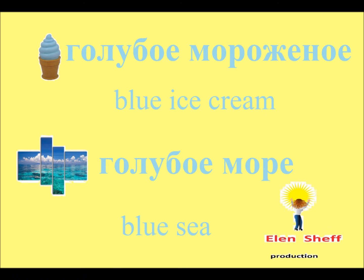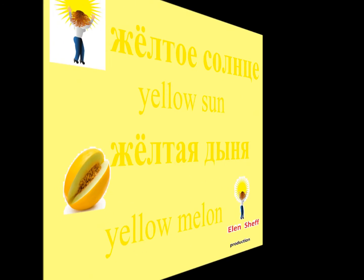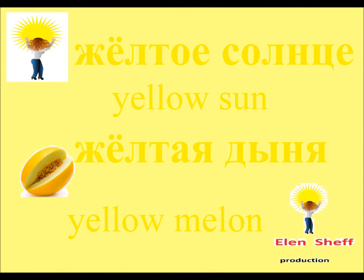Го-лу-бо-е мо-ро-же-но-е. Голубое мороженое. Го-лу-бо-е мо-ре. Голубое море. Жел-та-е солн-це. Желтое солнце. Жел-та-я ды-ня. Желтая дыня.